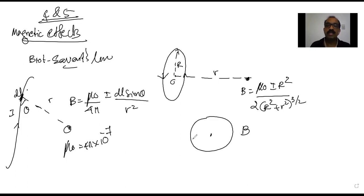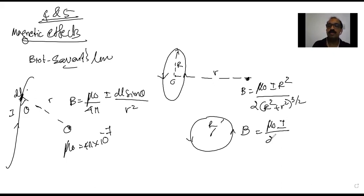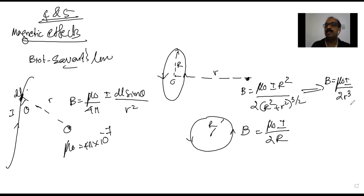Along with that, the magnetic field at the center of a loop of radius R is given by B = μ₀I / 2R. Also, if it is a short or small loop where the radius is negligible compared to the distance r, the equation becomes B = μ₀I / 2r³.